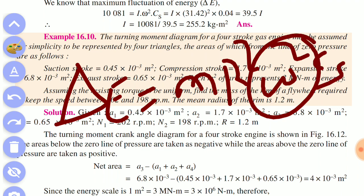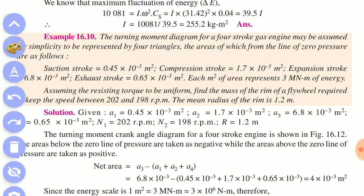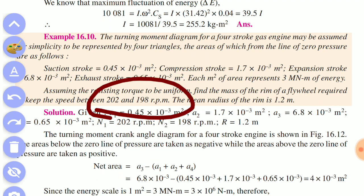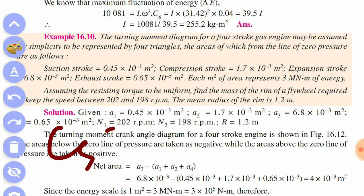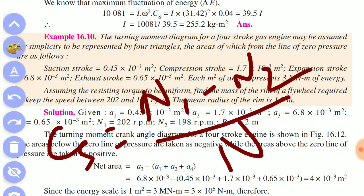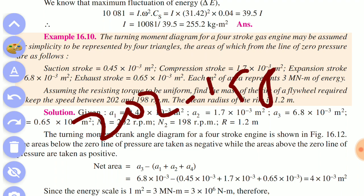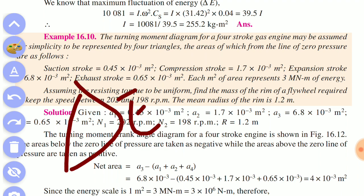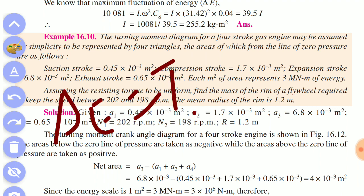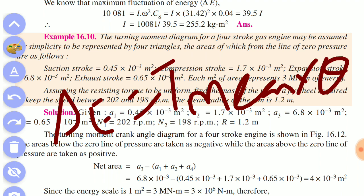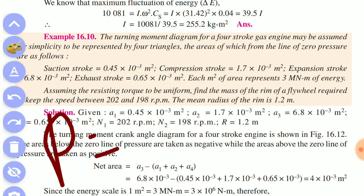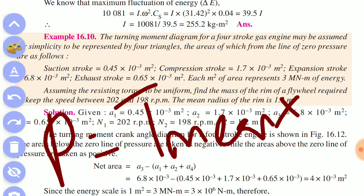The mean speed is equal to n1 plus n2 divided by 2. You can calculate the mean speed and then use Cs. You can use delta U with the formula: t mean into theta.